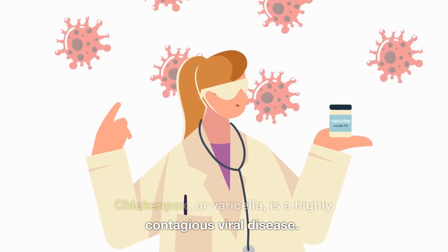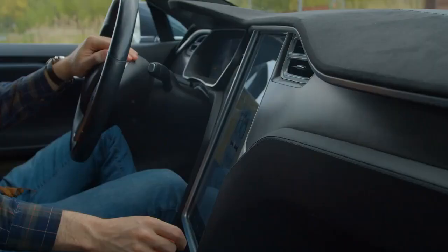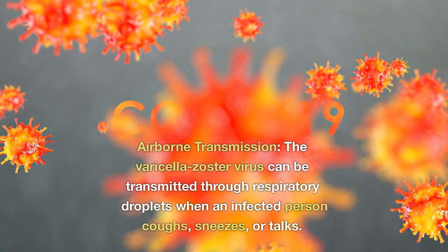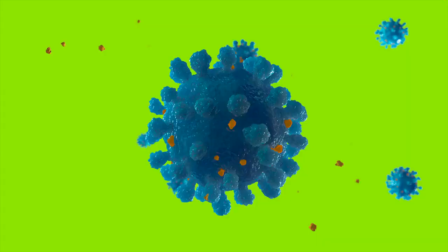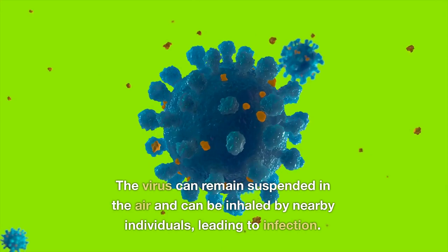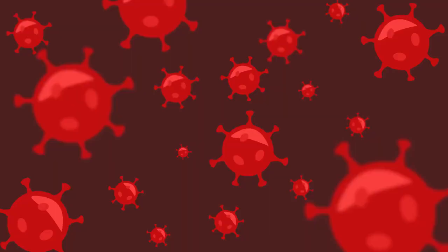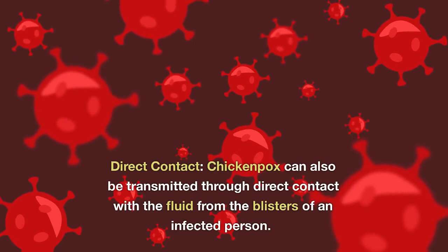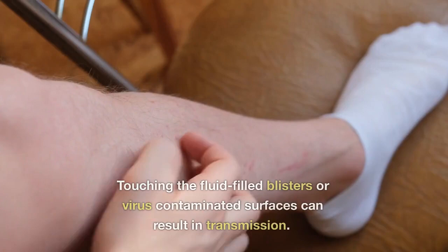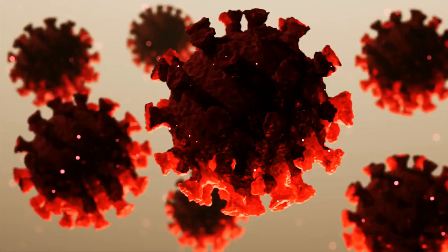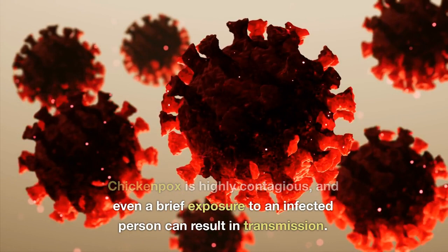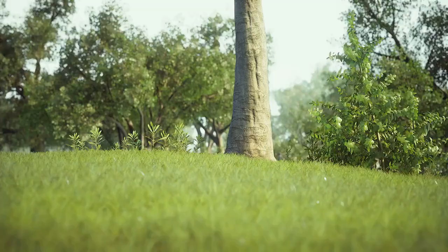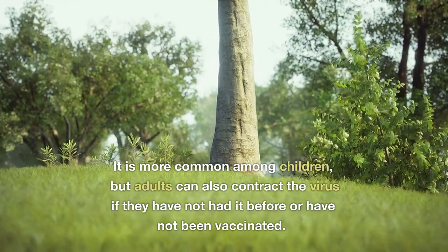How is chickenpox transmitted? Chickenpox, or varicella, is a highly contagious viral disease. Its primary modes of transmission include airborne transmission — the varicella zoster virus can spread through respiratory droplets when an infected person coughs, sneezes, or talks, and can remain suspended in the air to be inhaled by nearby individuals. Direct contact with fluid from an infected person's blisters or virus-contaminated surfaces can also result in transmission. Chickenpox is highly contagious; even brief exposure can result in infection, and it can affect adults who have not had it before or have not been vaccinated.